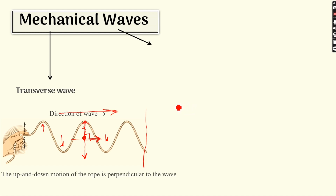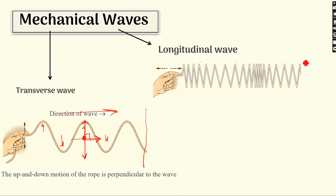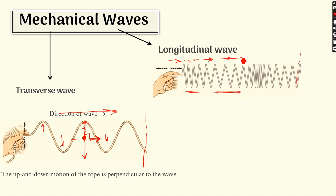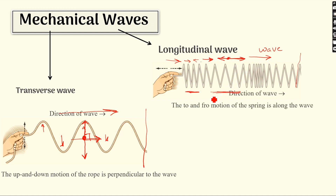An example of a longitudinal wave is a spring in which I create a compression by pushing it. As I push, these particles create a force in this direction, and the neighboring particles push in the direction of the right-hand side. So there is a compression formed, then a rarefaction formed. The orientation of particle vibration is to and fro horizontally, and the direction of the wave is also horizontally to the right. So the particles are vibrating parallel to the direction of propagation of the wave.